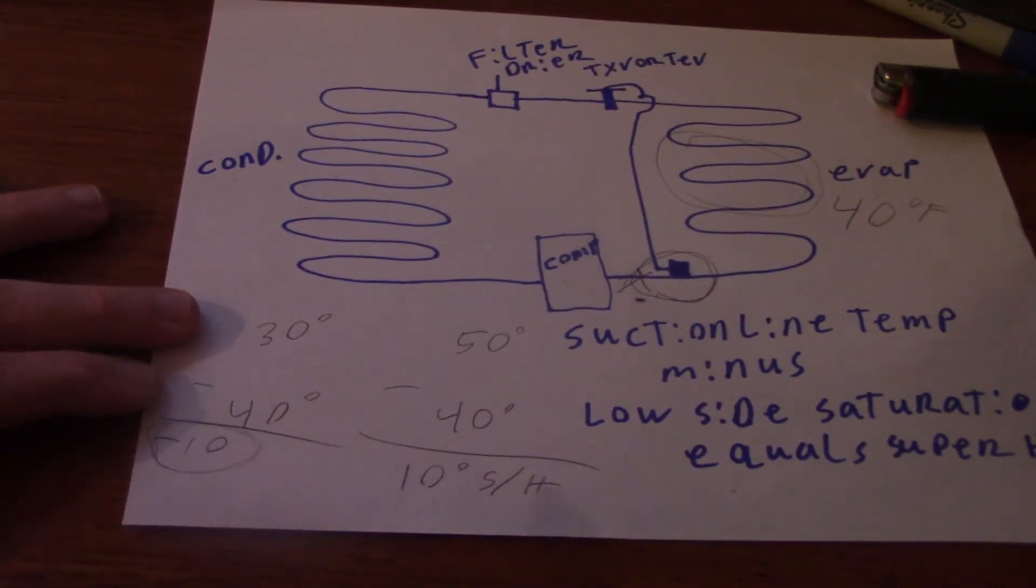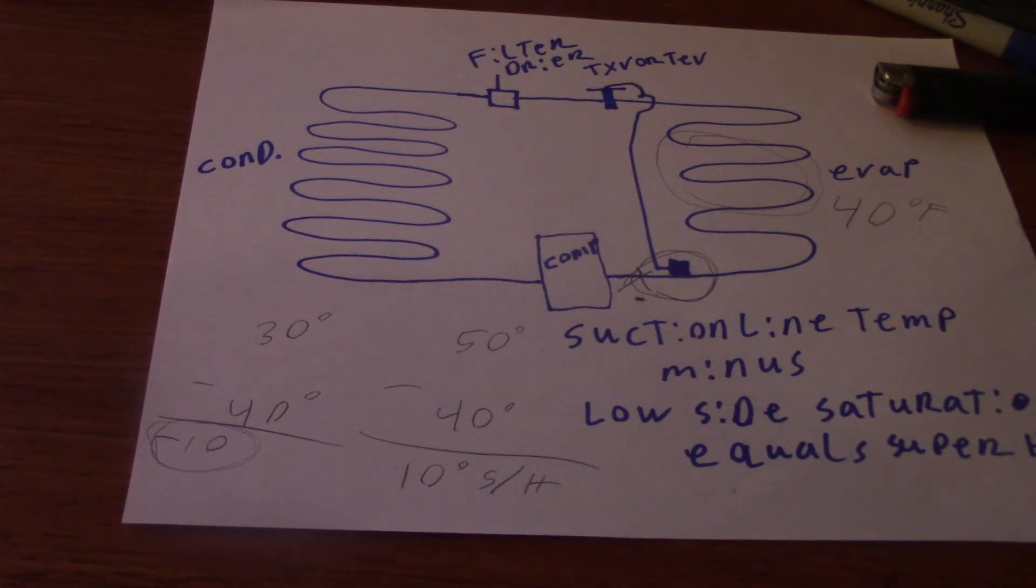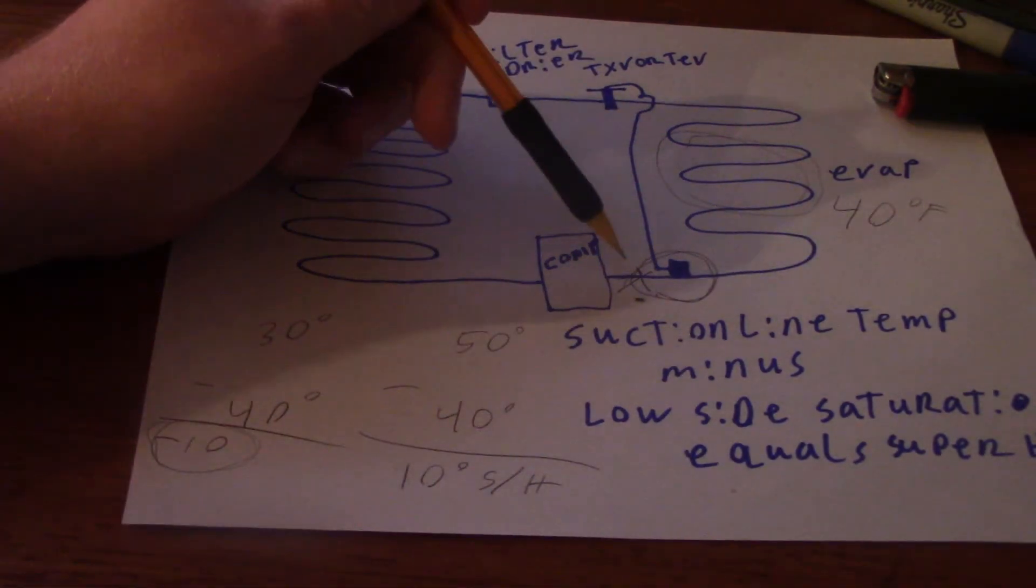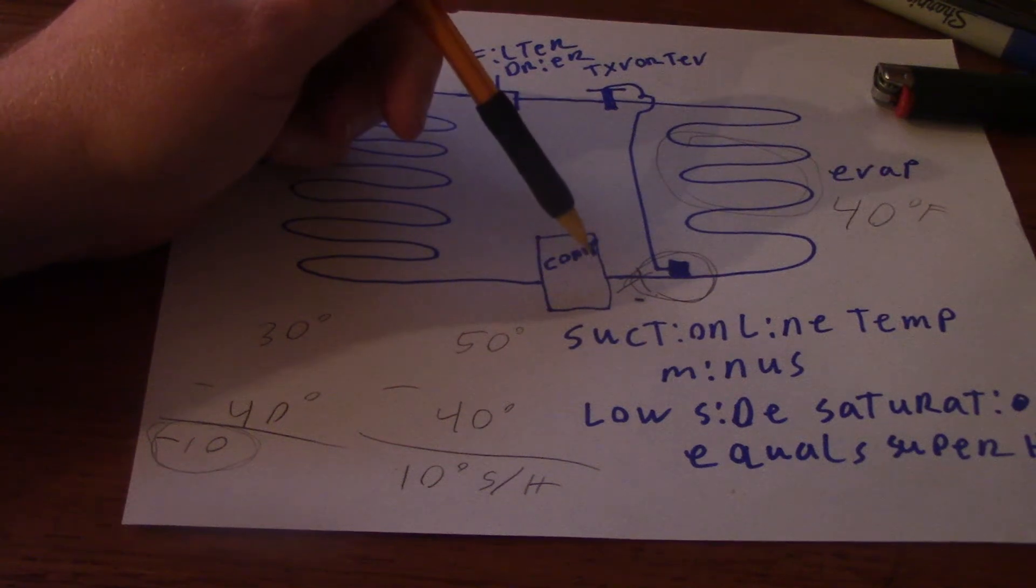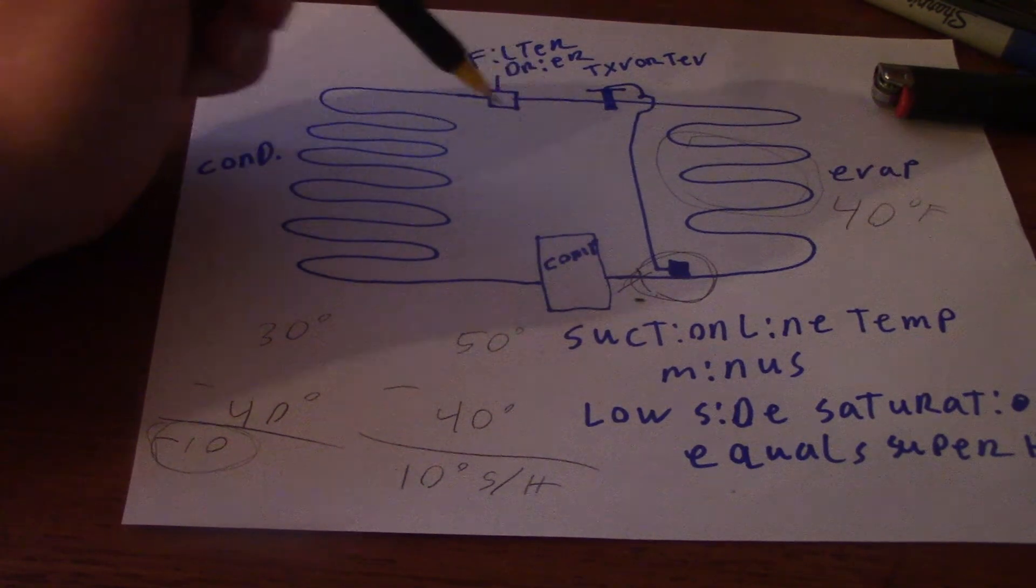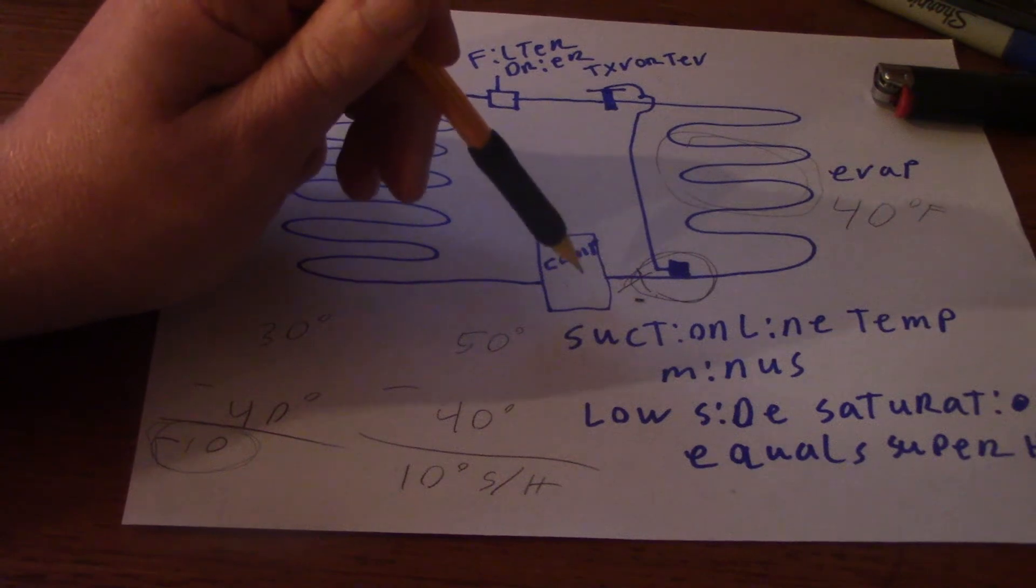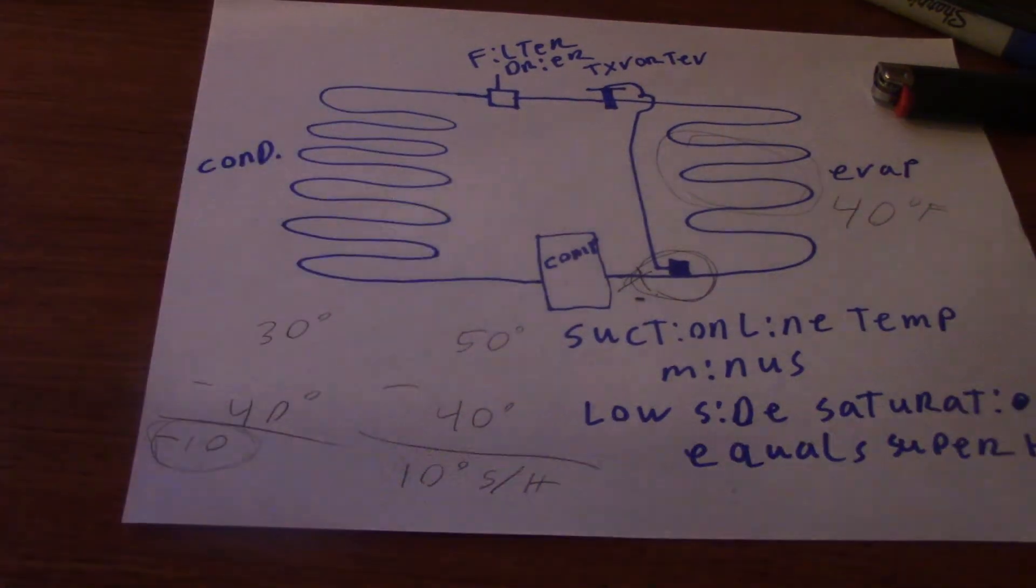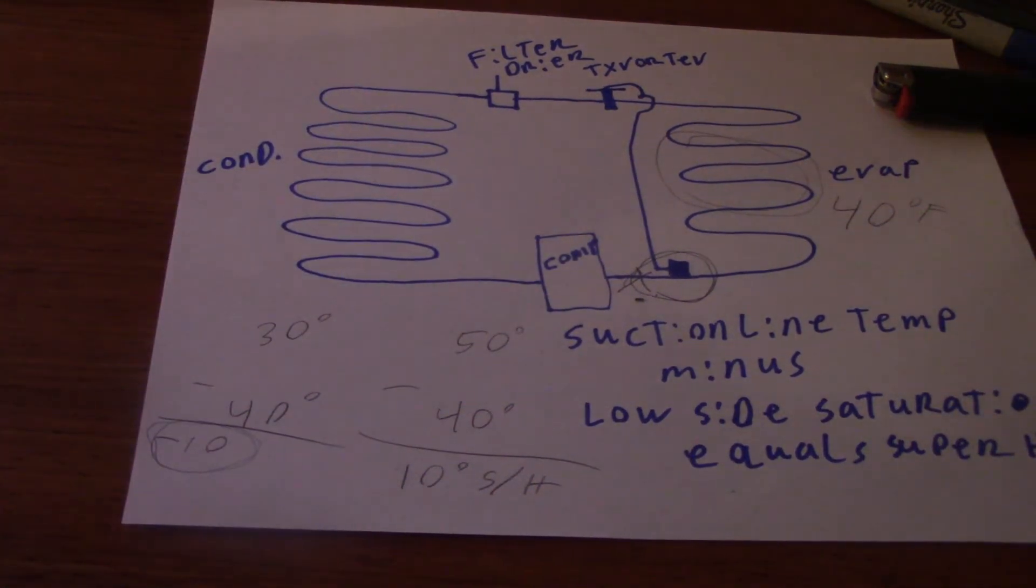What that means right there is you have no superheat going into the compressor. You actually have liquid refrigerant, and it's called slugging the compressor. That's what's actually going to happen, is this shell is going to start having, for the compressor is going to start having a liquid refrigerant in there. You were slugging the compressor, you're going to blow out your valves and pistons, all that stuff.